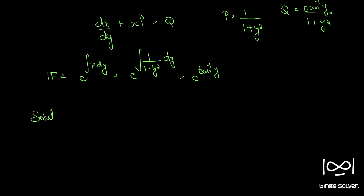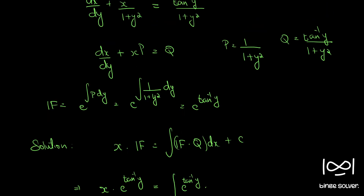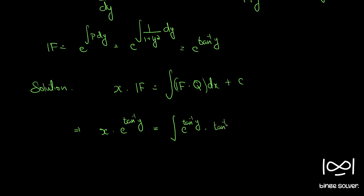The solution for such a linear differential equation is given by: x times the integrating factor equals the integral of the integrating factor times Q dy, plus c. So we have x·e^(tan⁻¹y) = integral of e^(tan⁻¹y) · (tan⁻¹y / (1 + y²)) dy + c.